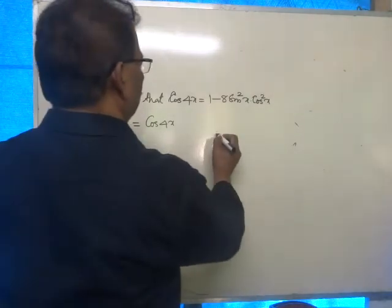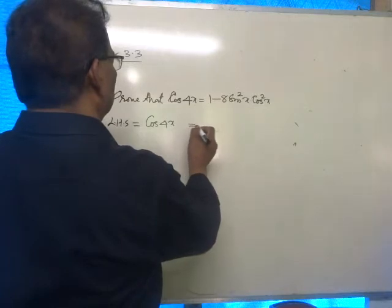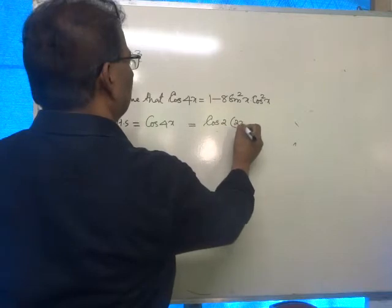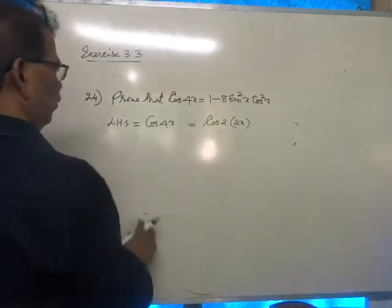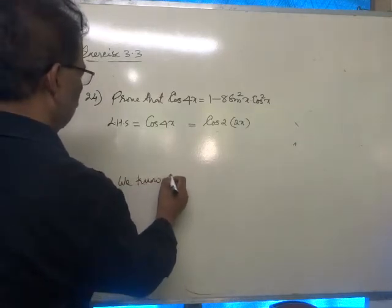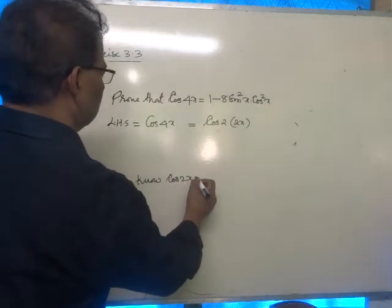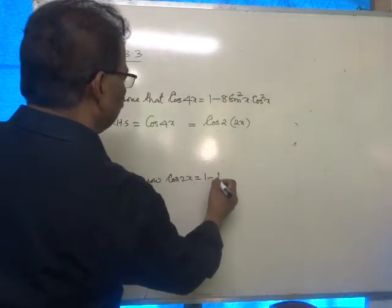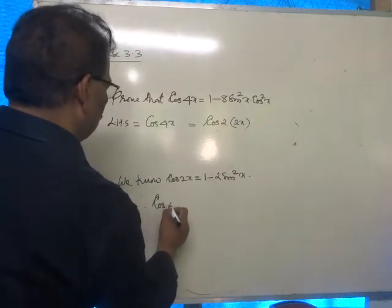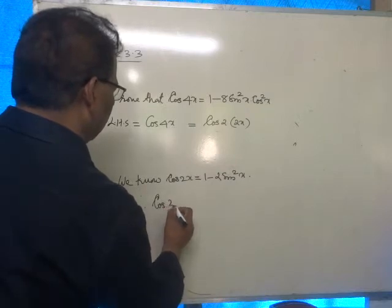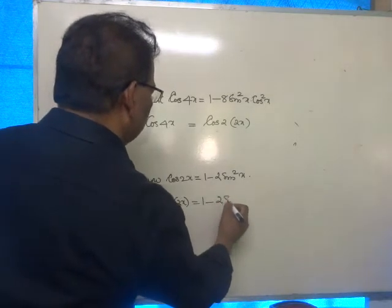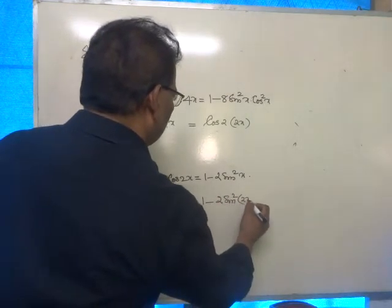We are going to write cos 4x as cos twice 2x. We know cos 2x equals 1 minus 2 sin squared x. Therefore, cos 2 times 2x equals 1 minus 2 sin squared 2x.